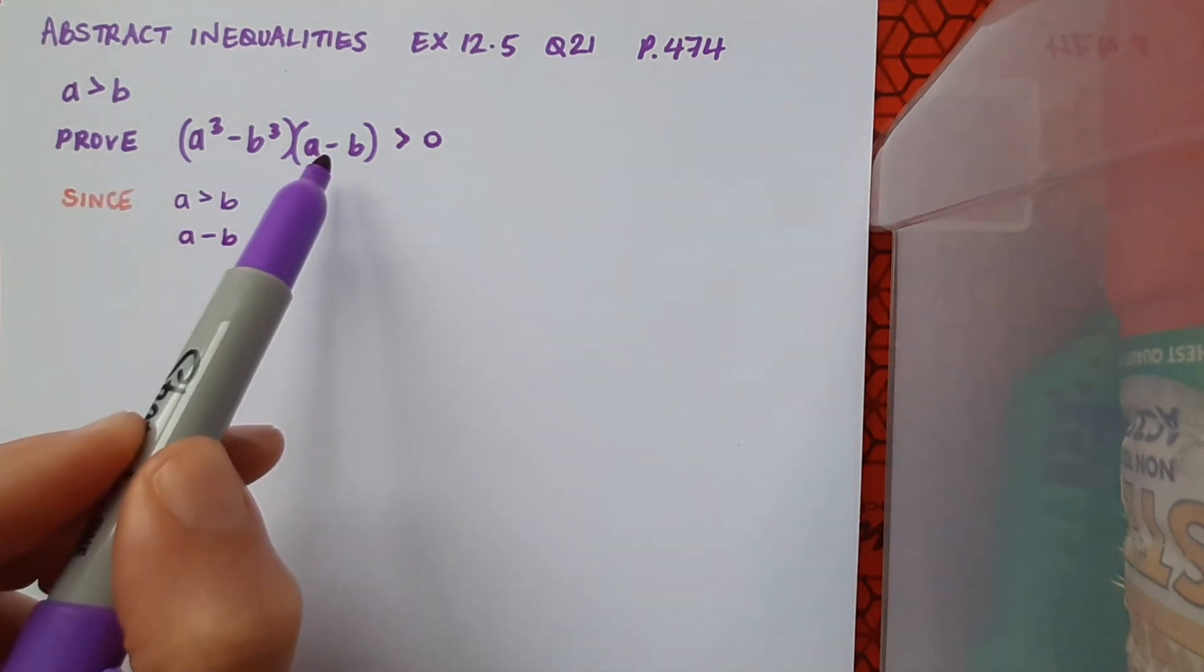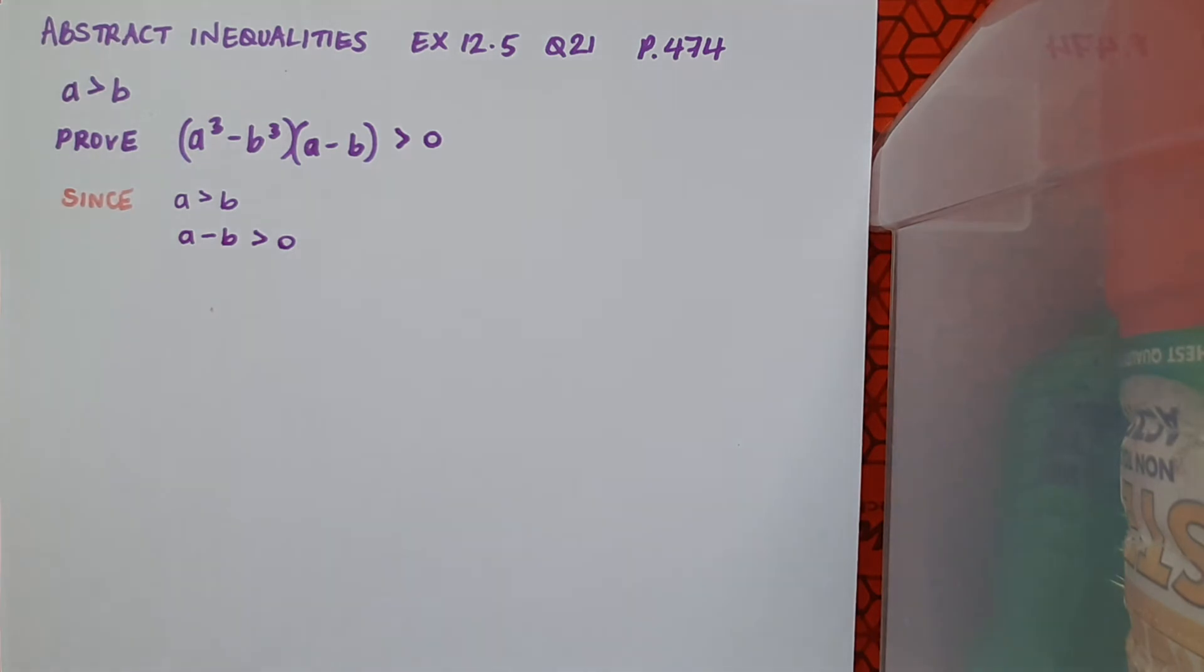Notice that one of my brackets in the statement that I'm trying to prove is the a minus b bracket. And I can also state that if a is greater than b, that a cubed is greater than b cubed. Now we did a little bit of work on that from page 460, question 13. So if you have that question done, and I think I may even have a video made of it, you can go back and refer to that if needs be to convince yourself of this.